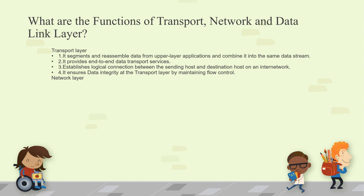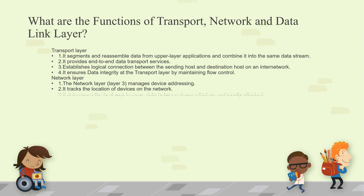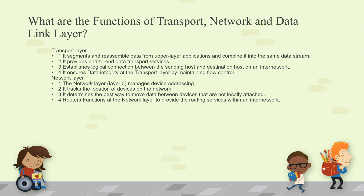The Network layer is the Layer 3 managing device addressing — which means IP addressing. It tracks the location of devices on the network and determines the best way to move data between devices that are not locally attached. It decides the path that traffic has to flow. IPv4 and IPv6 are involved here, and routers function at the Network layer to provide routing services within and between networks.